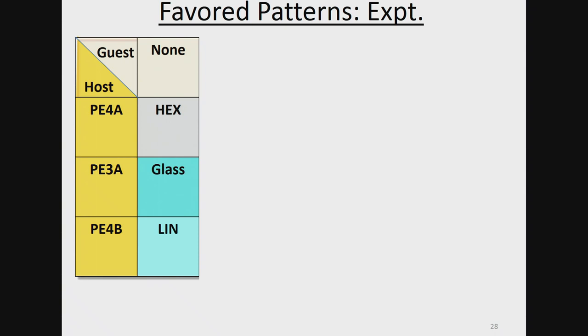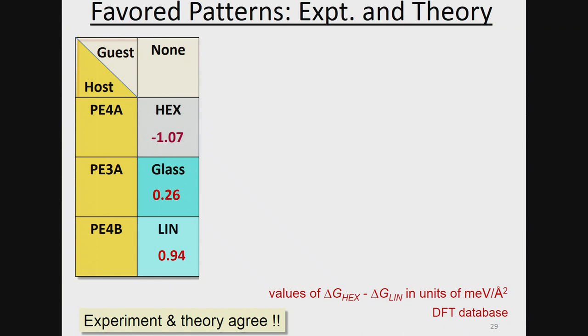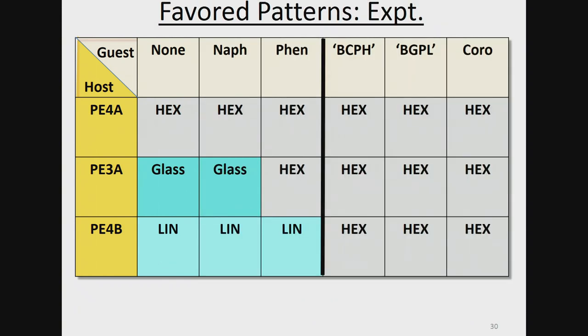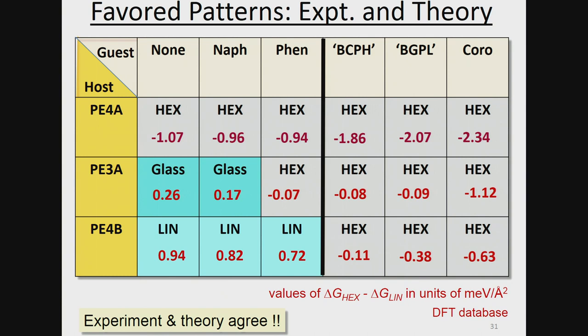To summarize: with just the host molecules, one forms hex, one forms glass, and one forms linear. I can do DFT calculations to check the difference in free energies between the two — a negative number means hex is favored, a positive number means linear is favored, and indeed that's what DFT gives. If the difference between the two is small, there's competition between the two phases and a glassy phase results. When guests are introduced: this molecule stays in hex; initially glass, then a disorder-to-order transition to hex; and linear, linear, linear then to hex, hex, hex. In every case experiment and theory agree about what should be the favored phase.